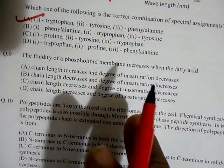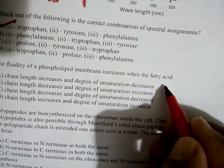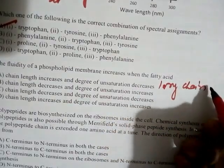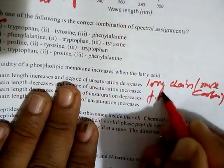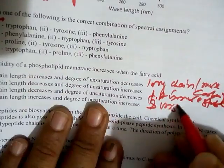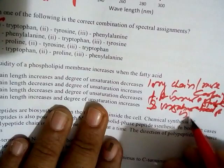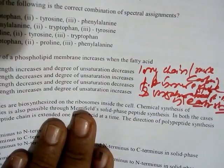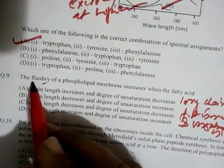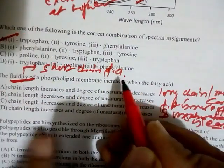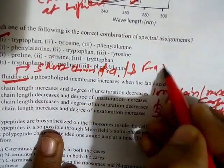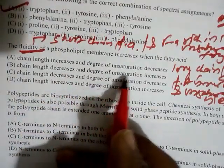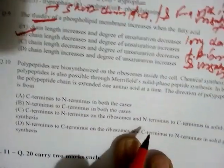Question nine: Fluidity of a phospholipid membrane increases under which conditions? Long-chain fatty acids are more stable and decrease fluidity. Unsaturated fatty acids are least stable and remain liquid at room temperature, like oil, due to their multiple double bonds. Fluidity is maintained by using short-chain and highly unsaturated fatty acids. So the answer is: chain length decreases and degree of unsaturation increases.